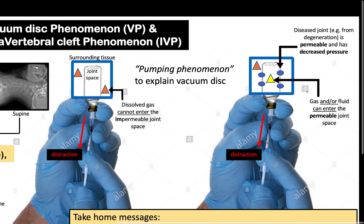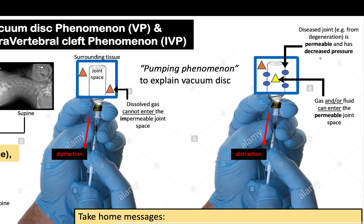However, when you have a diseased joint such as this joint with joint degeneration, the joint space is now permeable. When you provide stresses on this joint, such as distraction forces, gas and or fluid can enter the permeable joint space.